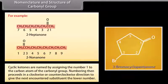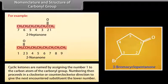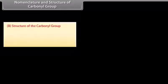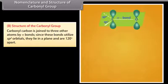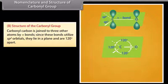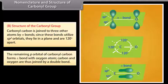Cyclic ketones are named by assigning number 1 to the carbon atom of the carbonyl group; numbering then proceeds clockwise or counterclockwise to give the next encountered substituent the lower number. Carbonyl carbon is joined to three other atoms by sigma bonds. Since these bonds utilize sp2 orbitals, they lie in a plane and are 120 degrees apart. The remaining p orbital of carbonyl carbon forms a pi bond with the oxygen atom.